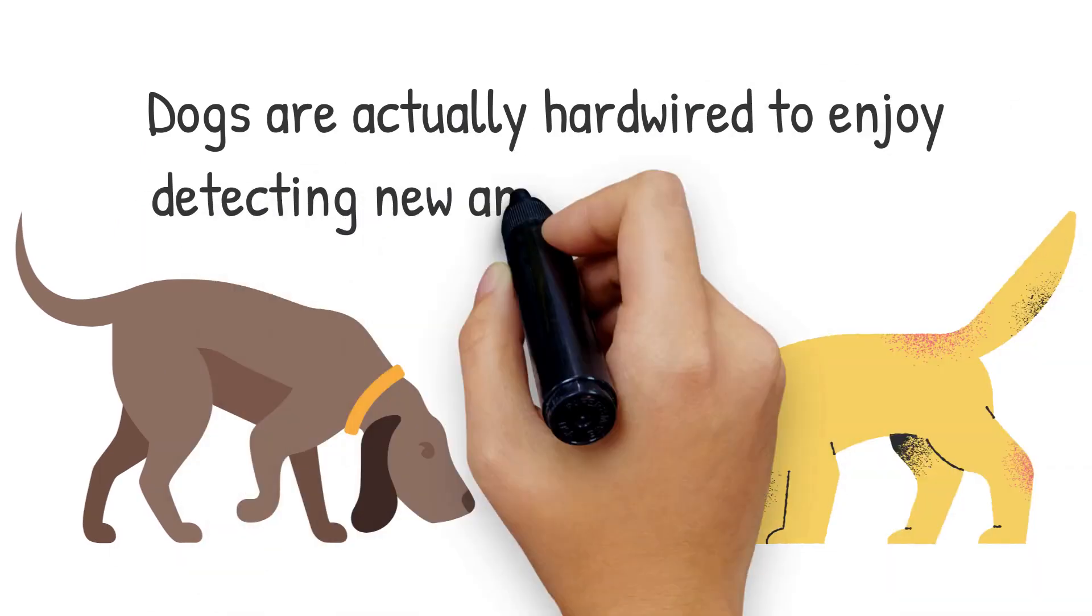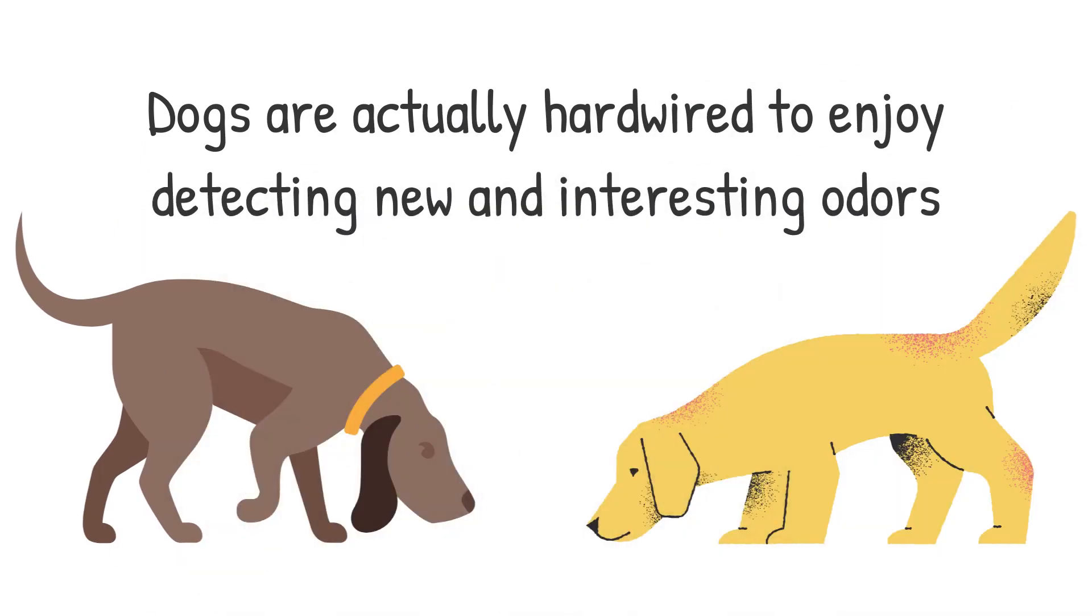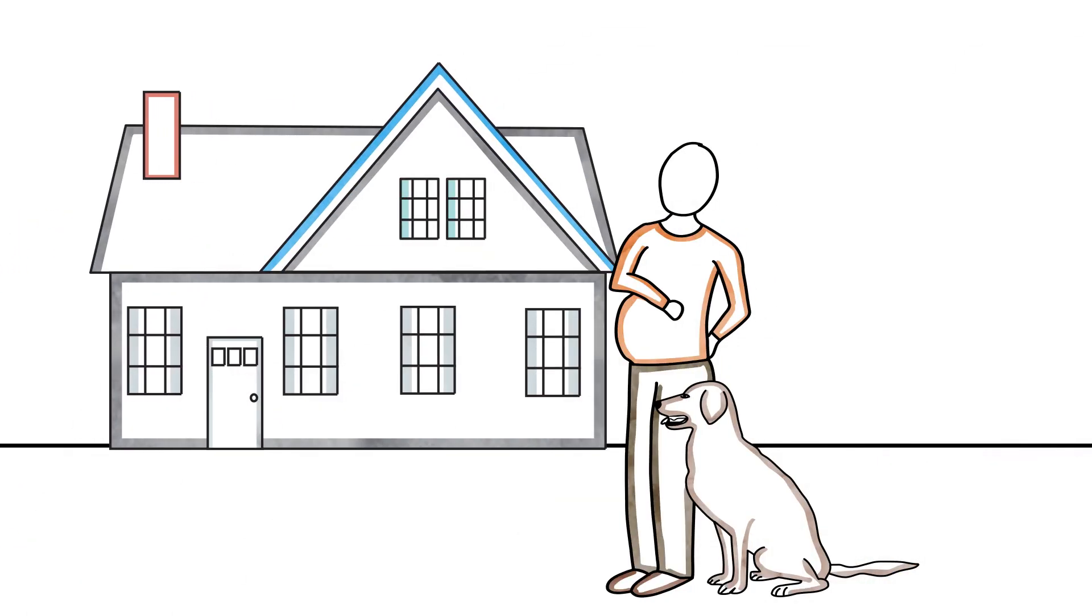Dogs are actually hardwired to enjoy detecting new and interesting odors due to the special receptor cells located in the roof of their mouth. When it comes to sniffing crotches and butts, they just want to know where you've been or are just trying to say hello.